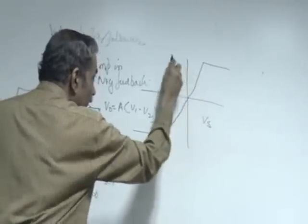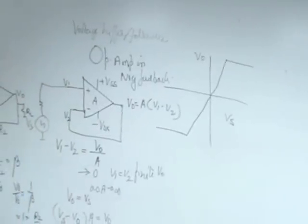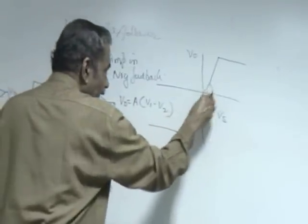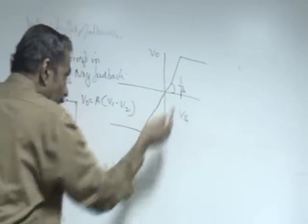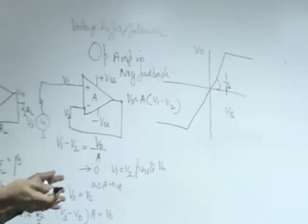If you plot Vs versus V naught for the amplifier with feedback, this factor becomes 1 over beta. If beta is 1, output by input.